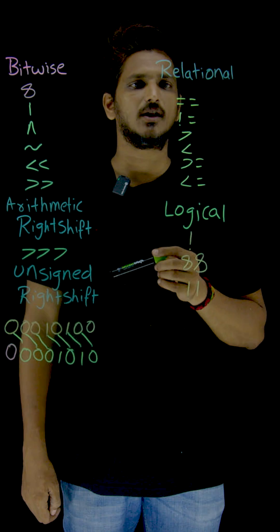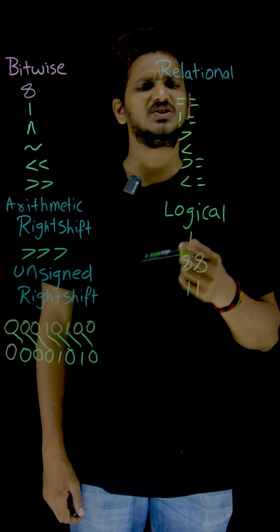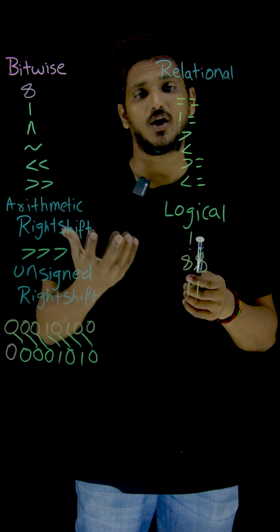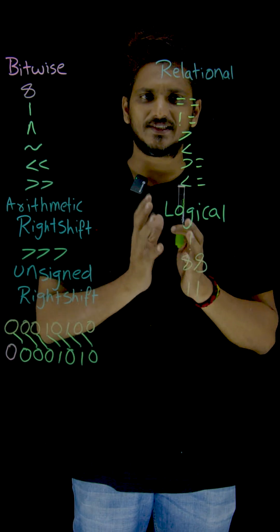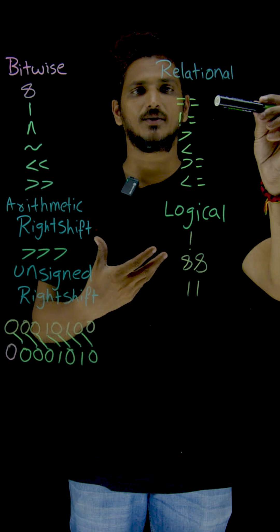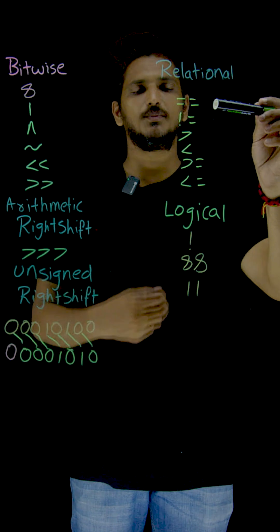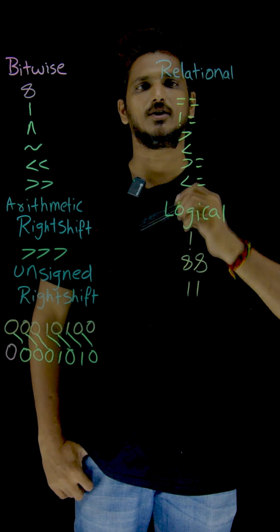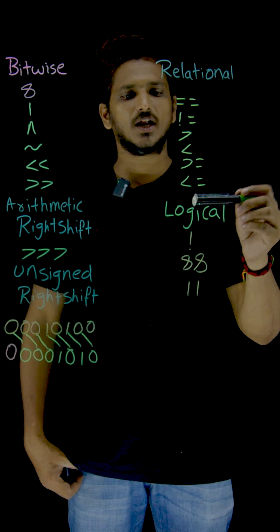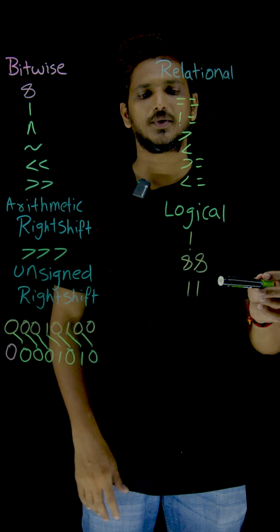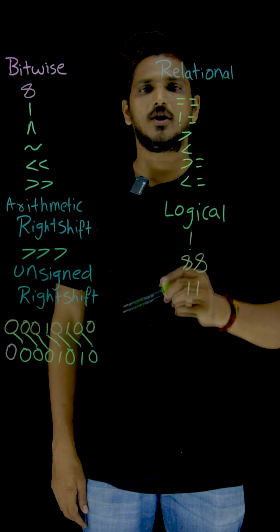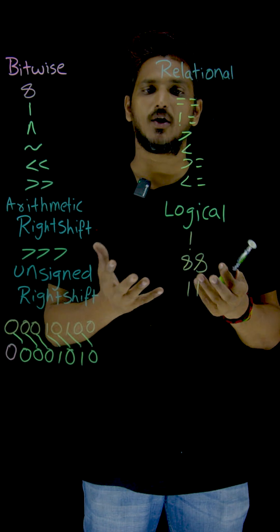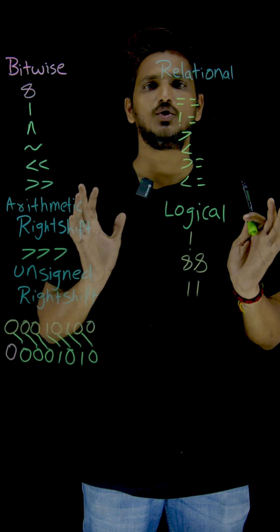Next, relational and logical operators. There is no change here — all the operators are the same as in our previous programming languages. Equal to checks the relation between two variables, not equal to, greater than, less than, greater than or equal to, less than or equal to. Similarly, logical operators: not, and, and or operations — the same meaning as in previous programming languages.